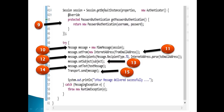Step 10: using the session instance, create a message instance. Step 11: using the setFrom method, set the email address on the message instance — this is the address from which the email is to be sent. Step 12: using the setRecipients method, set the email address on the message instance — this is the address to which the email is to be sent. Step 13: using the setSubject method, set the subject of the email in the message. Step 14: using the setText method, set the text of the email in the message. Step 15: the Transport class has a static send method. Using the send method, the email is sent to the recipients.